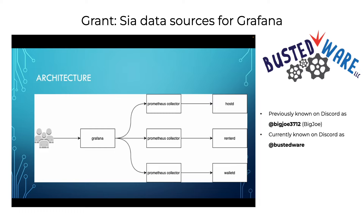Prometheus is an open source data collection tool built for monitoring, and Grafana is an open source dashboarding tool that visualizes data from Prometheus and other sources. Prometheus is a pull-based monitoring system — exporters collect metrics from each target service. Forks of hostd, renterd, and walletd exist which expose Prometheus endpoints to support these dashboards. There is some refactoring work to merge into the official Sia repositories, with hostd prioritized first.